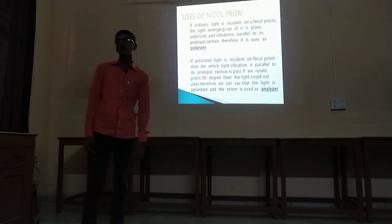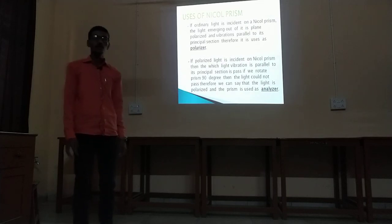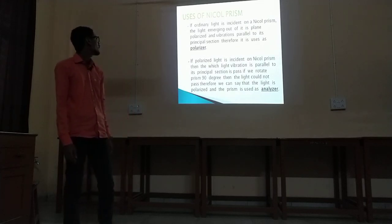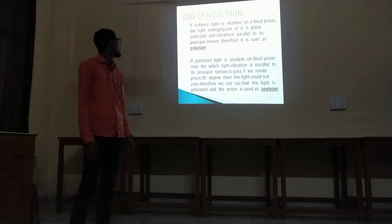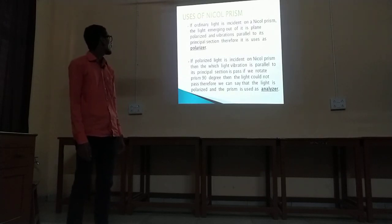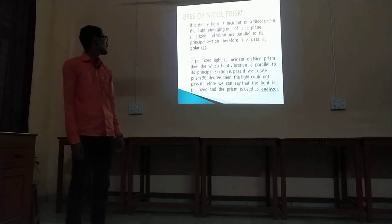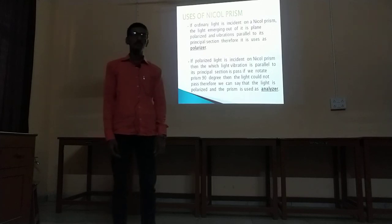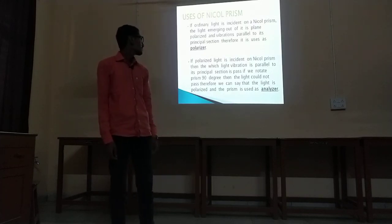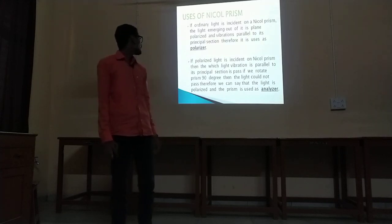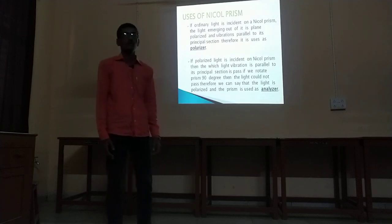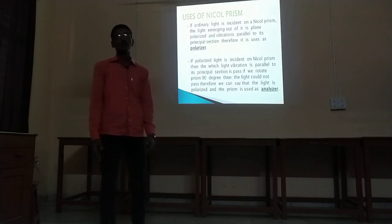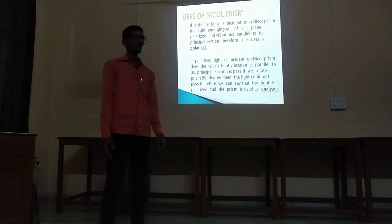Uses of Nicol Prism are of two types: as a polarizer and as an analyzer. As a polarizer: if ordinary light is incident on Nicol Prism, the light emerging out of it is plane polarized and its vibrations are parallel to the principal section. As an analyzer: if polarized light is incident on Nicol Prism, then light whose vibrations are parallel to the principal section is passed. If we rotate the prism 90 degrees, then the light cannot pass. Therefore, we can say the light is polarized and the prism is used as an analyzer.